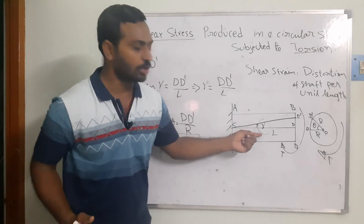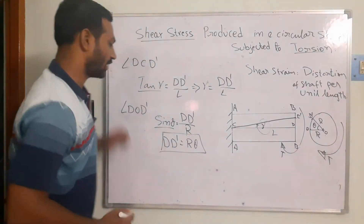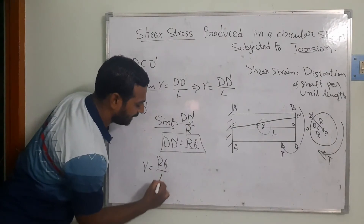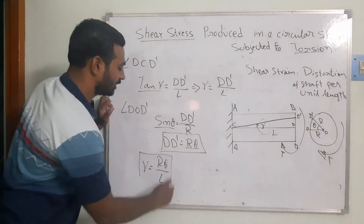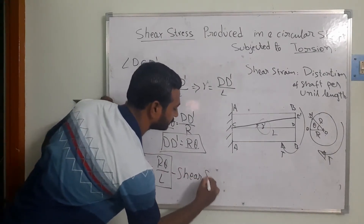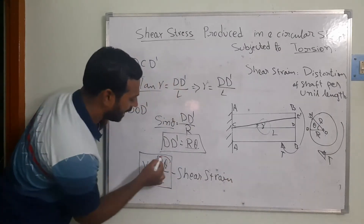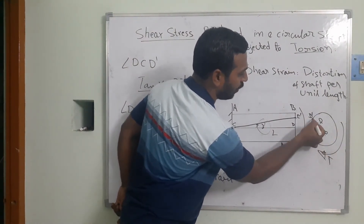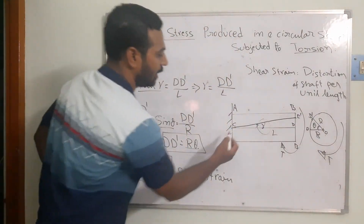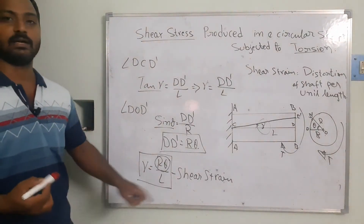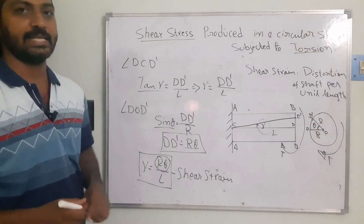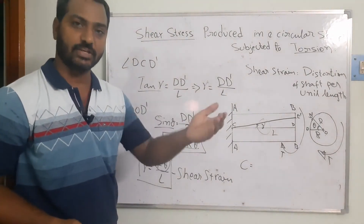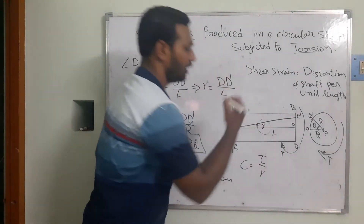Substituting DD' = Rθ into γ = DD'/L, we get: γ = Rθ/L. This shear strain (gamma) represents the distortion per unit length at the outer surface. The shear modulus C is defined as shear stress divided by shear strain: C = τ / γ.